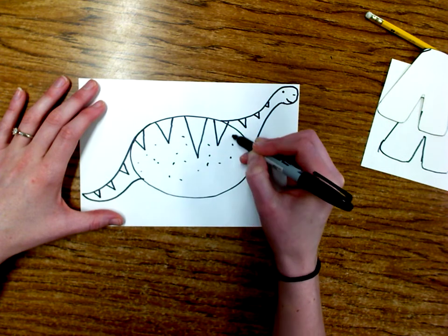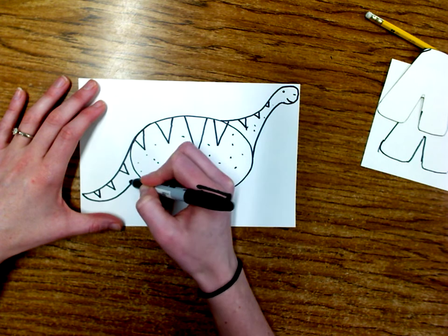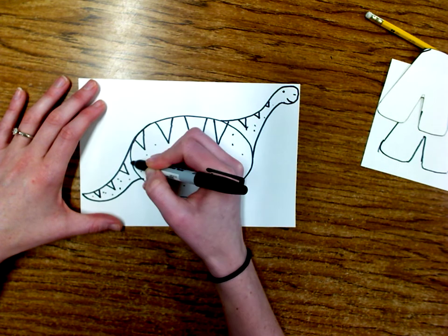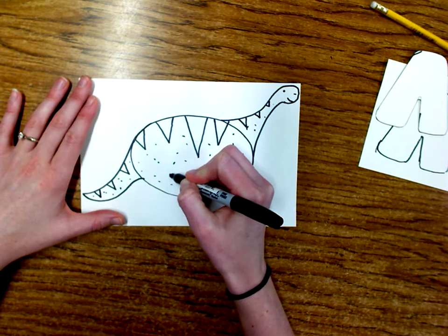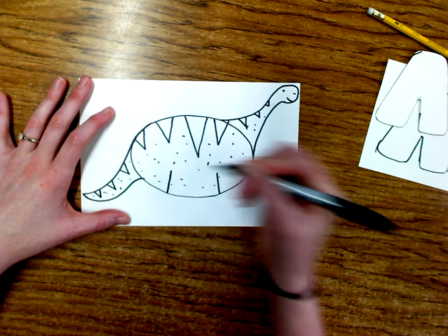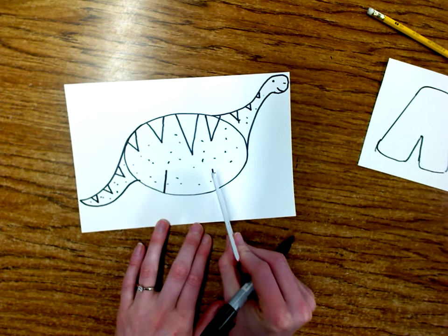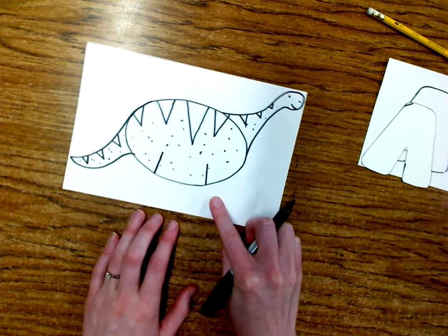And I'm gonna do one more thing. I'm gonna add two lines, one kind of like right here and one right here, that way I know where my legs are going to go. Like I said, this is gonna get cut out and then it'll go inside that notch.